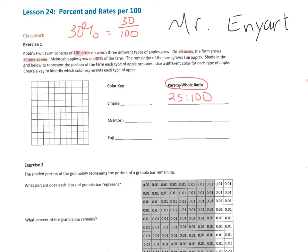So hopefully you were able to figure out that the 25 to 100 was found from 25 acres of empire apples to 100 total acres for the farm. Now 30% is going to be out of 100. So 30 out of 100, again, we have 100 acres, but 30 of those acres are going to be McIntosh.